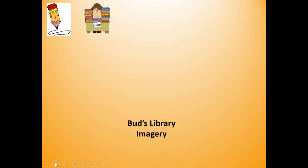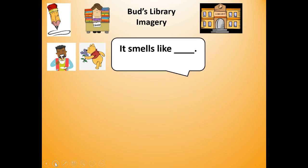Now you're going to take your pencil and answer this question: what did the library smell like? Use this sentence frame — it smells like. Write that sentence frame down and finish it with at least one to two examples of what it smells like. Push pause, write 'it smells like' and complete the sentence. Also, what did it sound like? You can say 'it sounds like.' Push pause, write 'it sounds like,' complete that sentence with one to two examples, and when you're done, push play again.